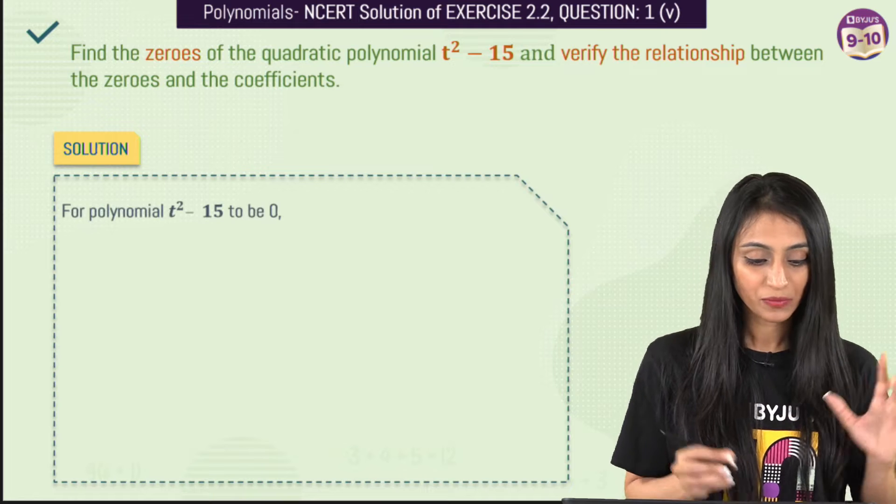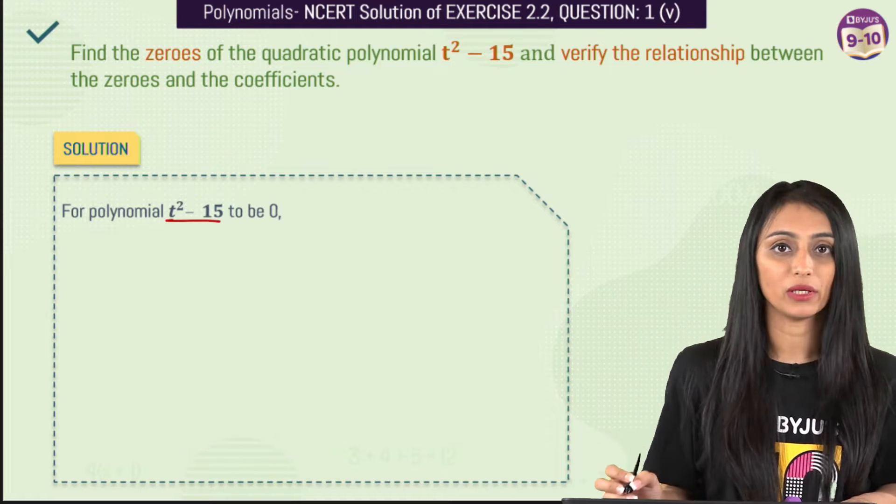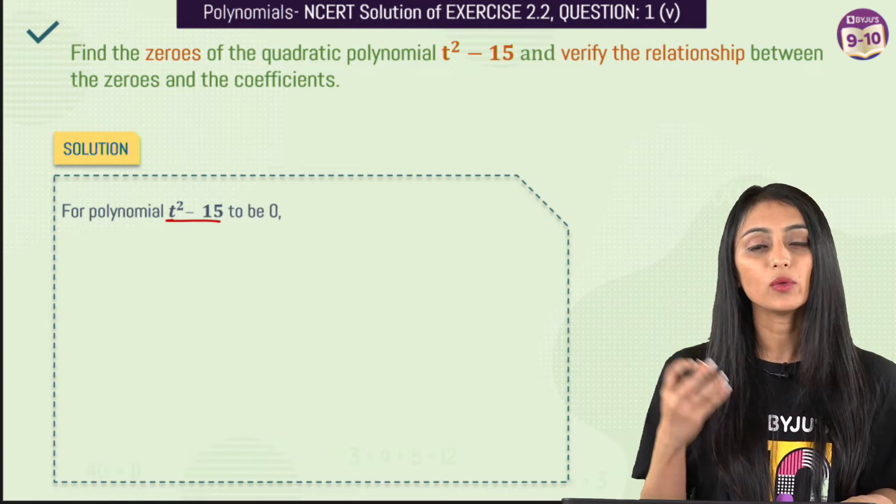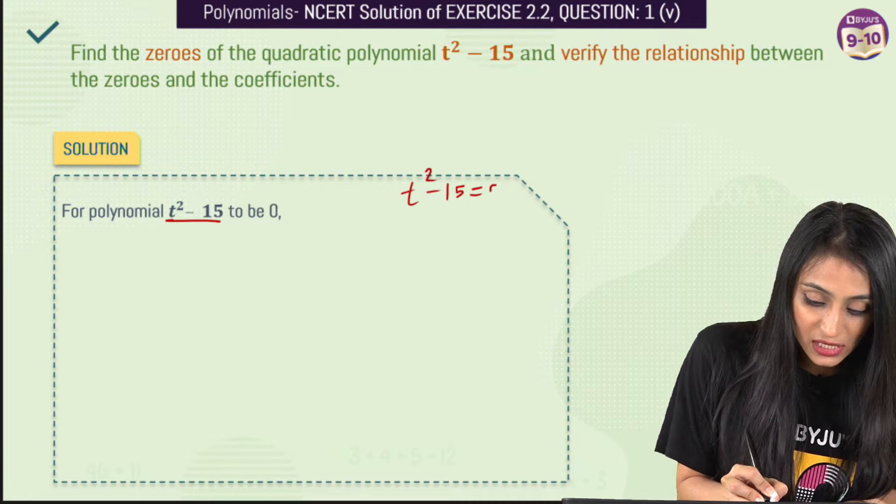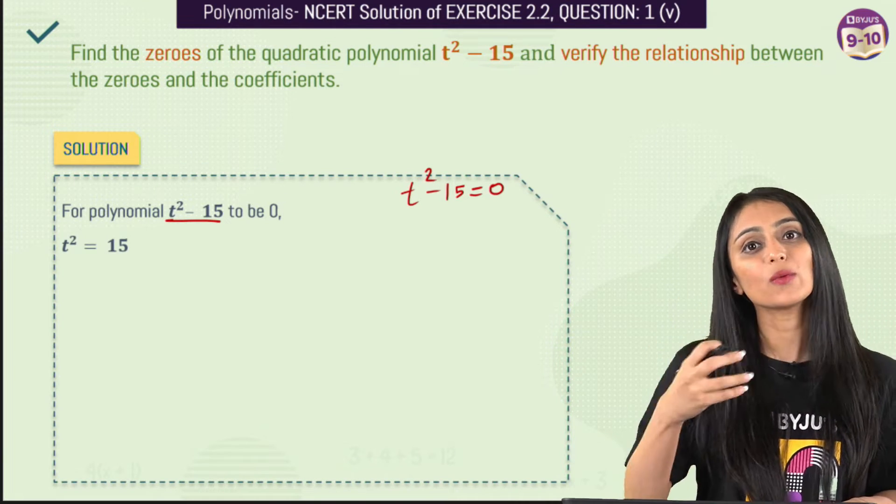Finding the zeros is very simple. This is a quadratic polynomial. To find the zeros, we have to equate this polynomial to zero. Once you equate this to zero, t² - 15 = 0, what do I get? I get t² = 15.